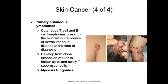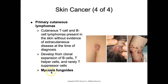Primary cutaneous lymphomas are cutaneous T cell and B cell lymphomas present in the skin without evidence of extracutaneous disease at the time of diagnosis. This is rare and is the second most common site of extranodal non-Hodgkin lymphoma. It develops from clonal expansion of B cells, helper T cells, and rarely suppressor cells. The most common type is cutaneous T cell lymphoma, with mycosis fungoides being the most prominent subtype, typically presenting with focal or widespread erythematous patches or plaques, and sometimes patches of alopecia.